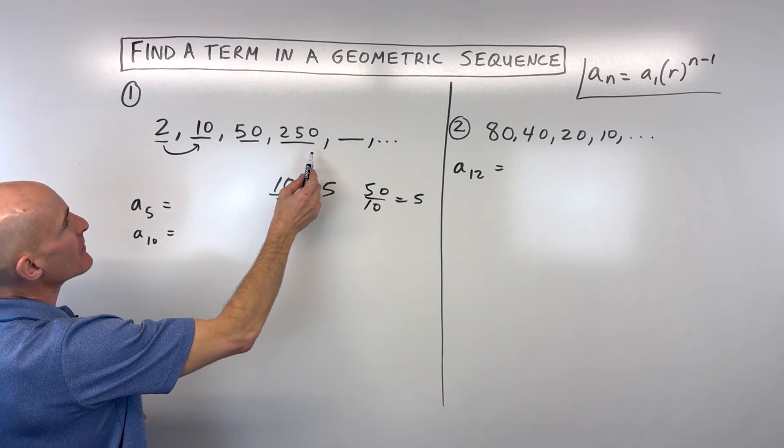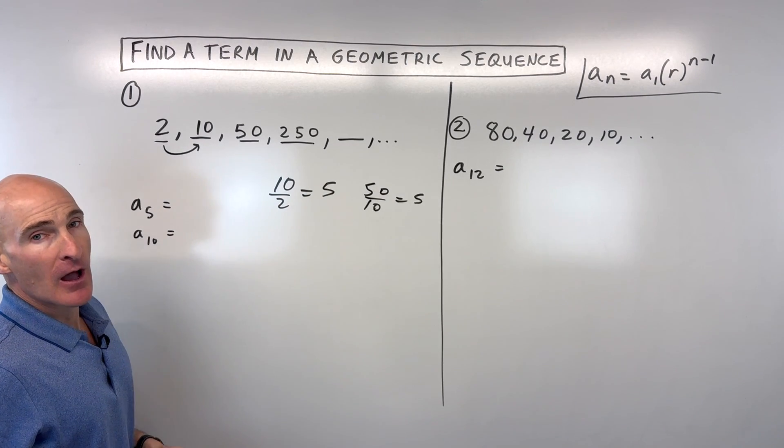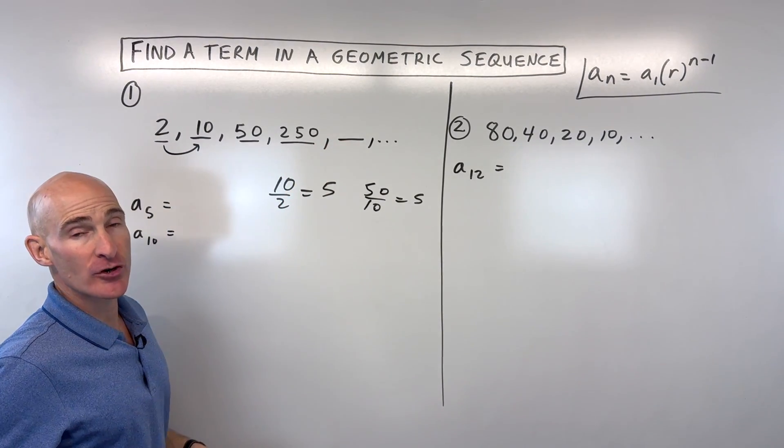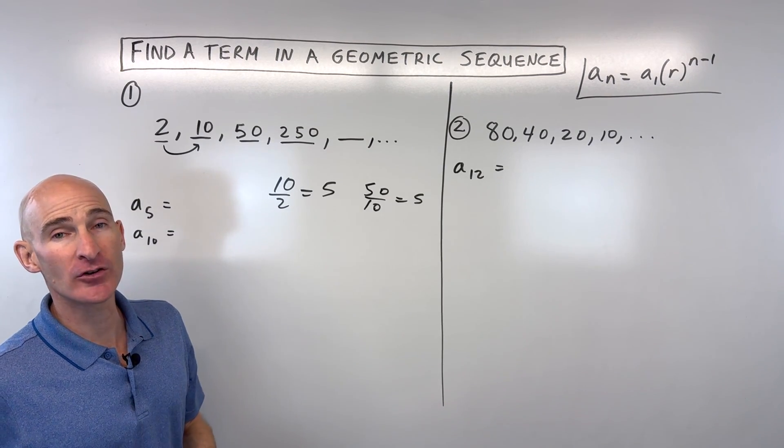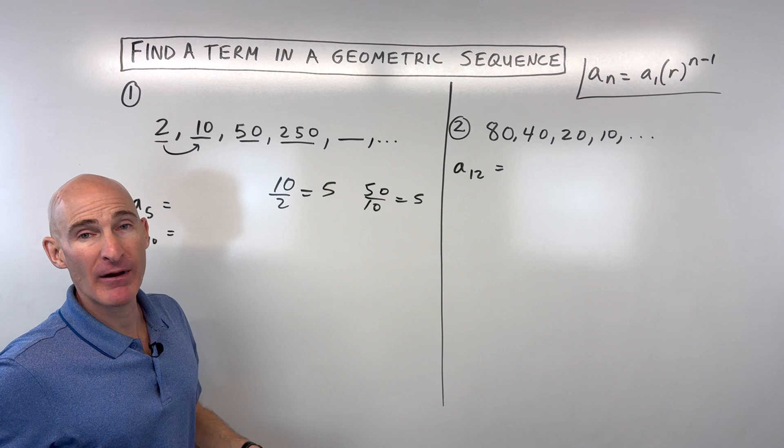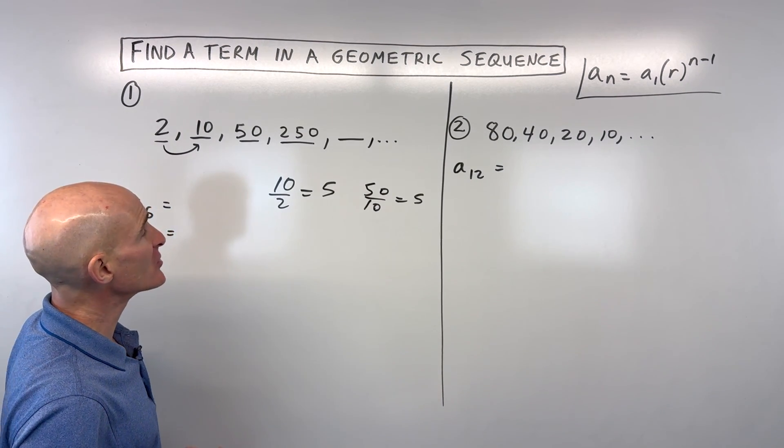Now, if we wanted to find, let's say, for example, this fifth term, how would we do that? Well, you could just keep multiplying by 5 until you get to the fifth term. But what happens if you want to find the 50th term or the 5,000th term? That would take quite a while to keep multiplying by 5 each time until you get to that term.